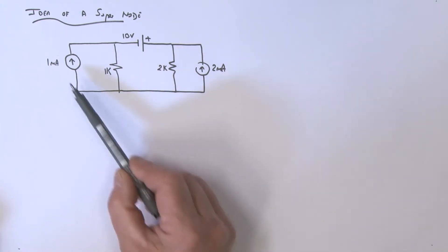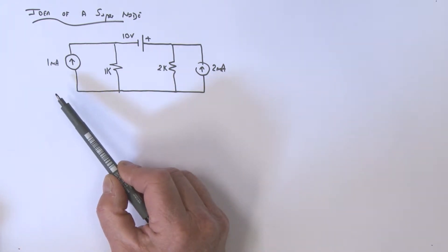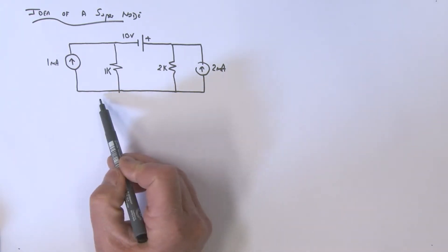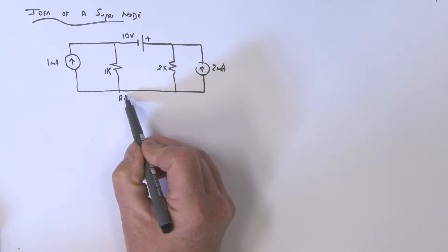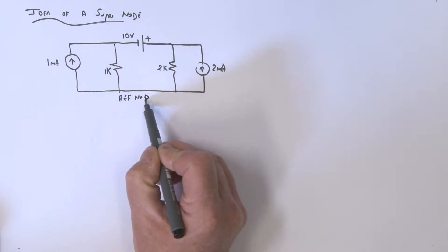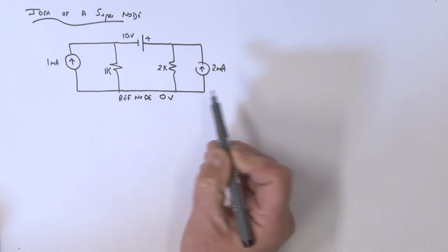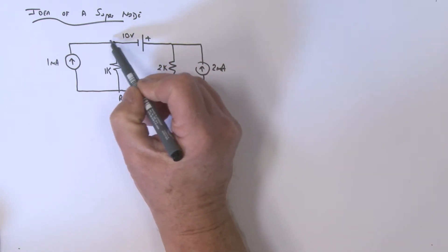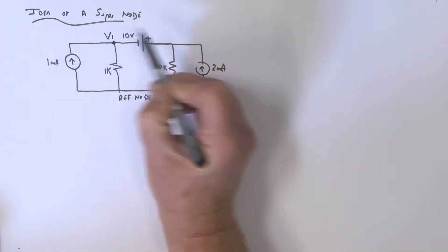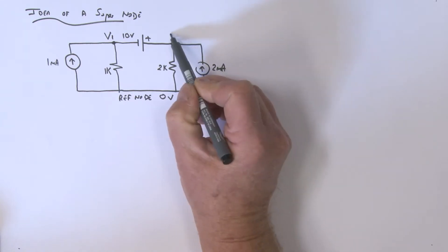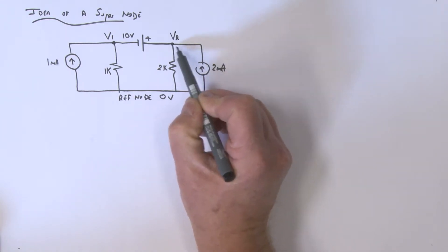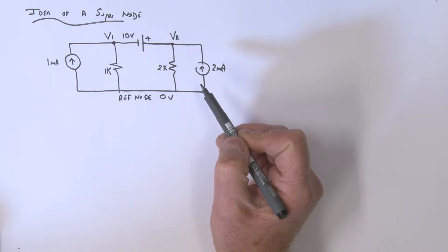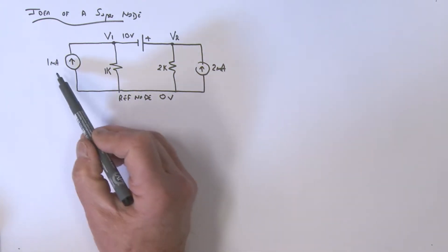Look at this problem here. We're going to use nodal analysis, so we're going to define this node as our reference node — that's zero volts. We're going to call this node 1 with voltage V1, and this is our V2 node voltage at node 2. We're going to sum the currents just as we've done before.